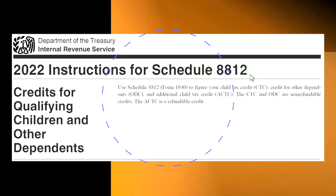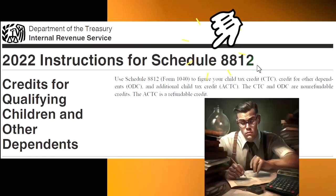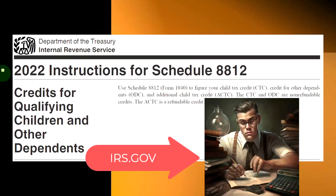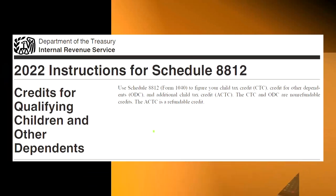Most of this information comes from the instructions for Schedule 8812, Credit for Qualifying Children and Other Dependents, Tax Year 2022. You can find it on the IRS website, irs.gov.